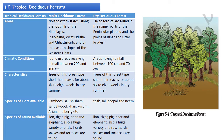Next are the tropical deciduous forests, which are divided into two types: moist and dry deciduous forests. Moist deciduous forests are found in the northeastern states, along the foothills of the Himalayas, Jharkhand, West Orissa, Chhattisgarh, and on the eastern slopes of the Western Ghats. Dry deciduous forests are found in the rainier parts of the peninsular plateau and the plains of Bihar and Uttar Pradesh.